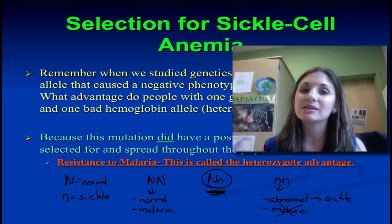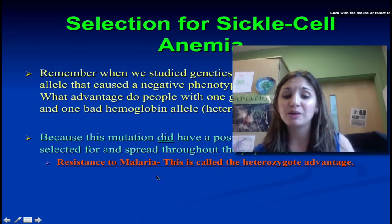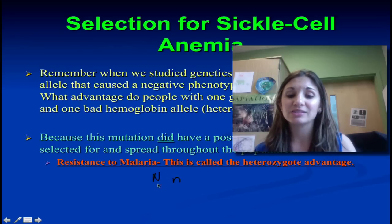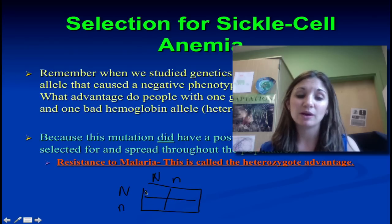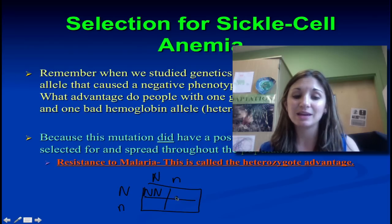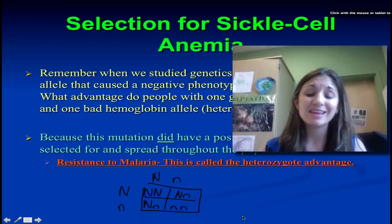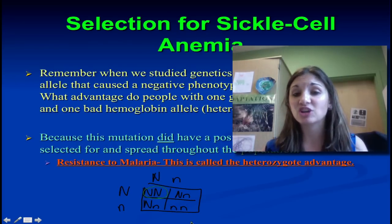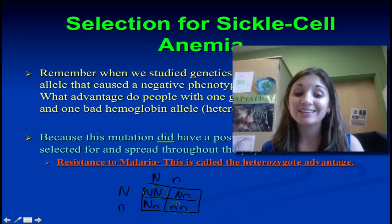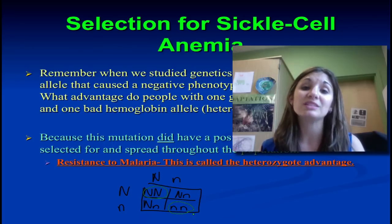The consequences of this — thinking back to our genetics — is that two heterozygous parents doing a Punnett Square have a 50% chance of having a child with that heterozygote advantage, but also a 25% chance of having a normal child susceptible to malaria, and a 25% chance of having a child susceptible to sickle cell anemia, which can be a truly devastating disease.